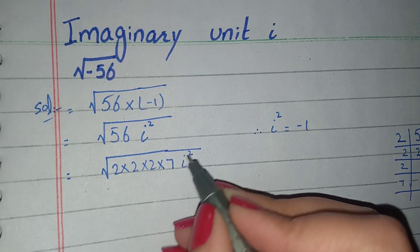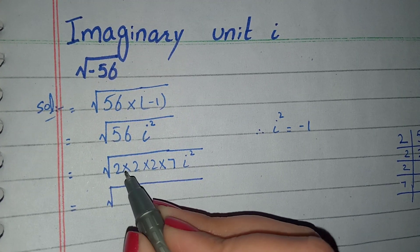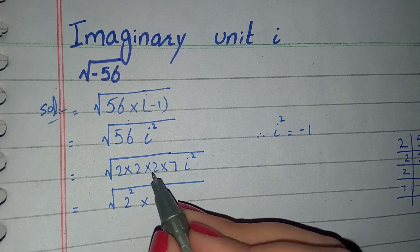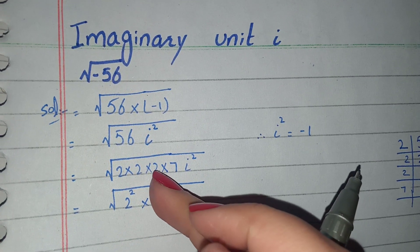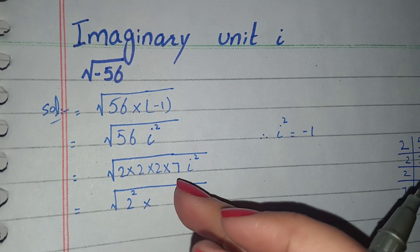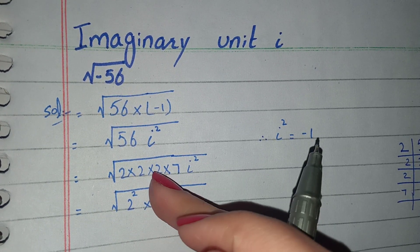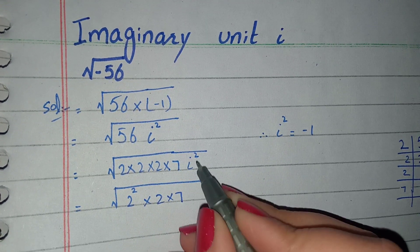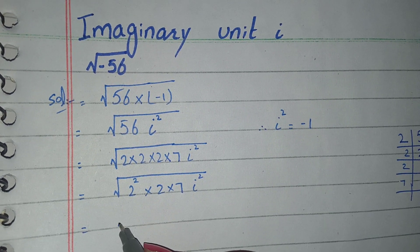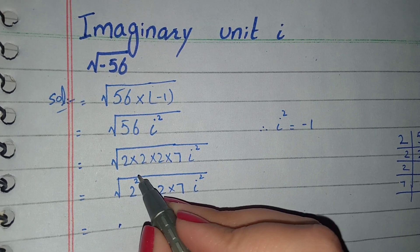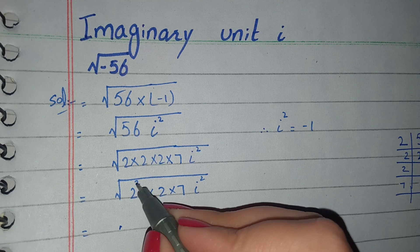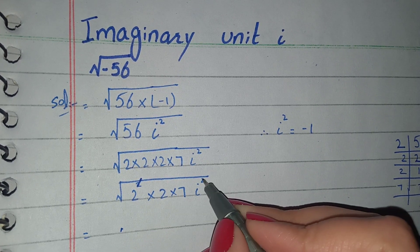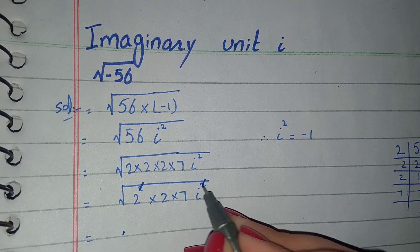We also write i² alongside the factors. We can write 2² from two of the 2s, but since one 2 appears only once and 7 appears once, we have 2² × 2 × 7 under the square root, together with i². The square cancels with the square root.